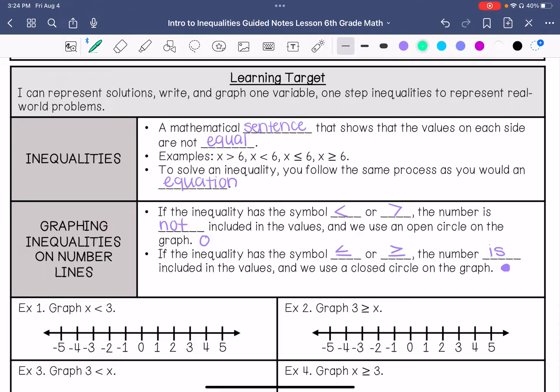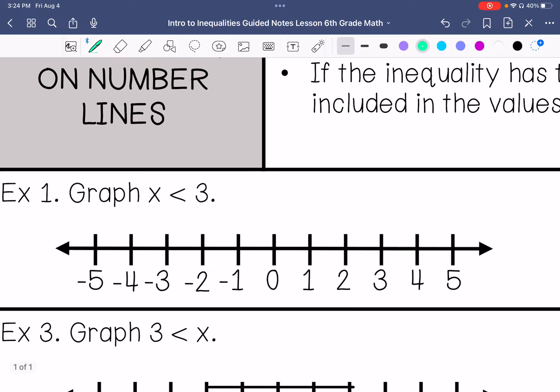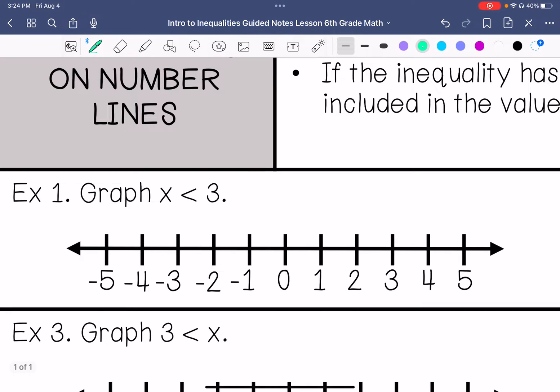Let's do some examples. Example number one says graph x is less than 3, so I would go to positive 3. It's not going to be equal to 3, so we're not going to include that number. And then x can be anything less than 3.